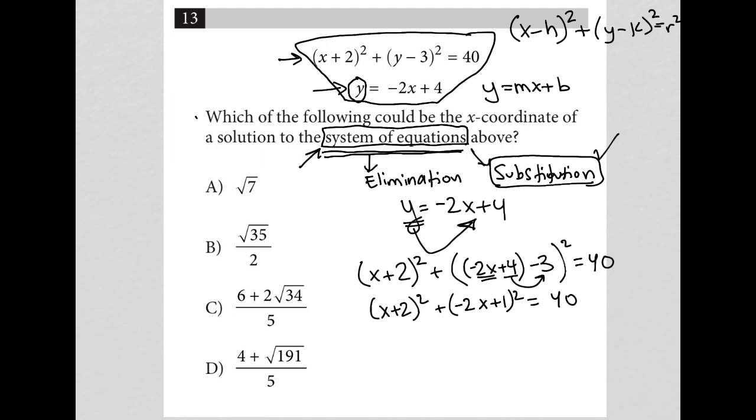I can expand both of these things. This is going to turn into x² + 4x + 4. Hopefully you know how I did that. Basically, I'm saying (x+2) times (x+2) and foiling. And then the next binomial that's being squared here, that's going to turn into -2x times -2x is 4x² and then -2x - 2x, so that's going to be -4x + 1. And then I have equals 40.